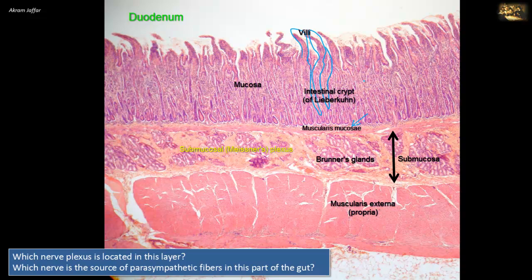Since this section belongs to the duodenum, the parasympathetic innervation to this plexus is provided by the vagus nerve. The vagus nerve supplies derivatives of the foregut and midgut with parasympathetic fibers. The hindgut — extending from the distal third of the transverse colon to the upper part of the anal canal — receives its innervation from the sacral parasympathetic outflow, S2, S3, and S4 segments of the spinal cord. So, because this is a section of the duodenum, the source of the parasympathetic fibers is the vagus nerve.